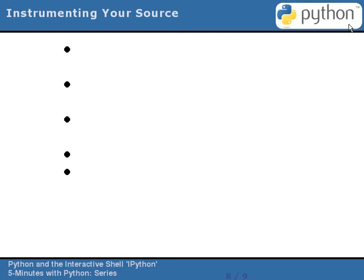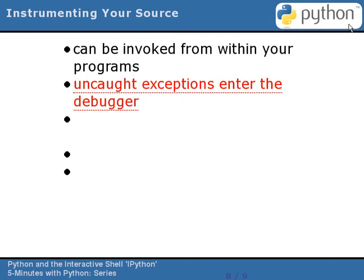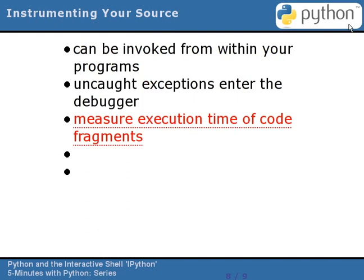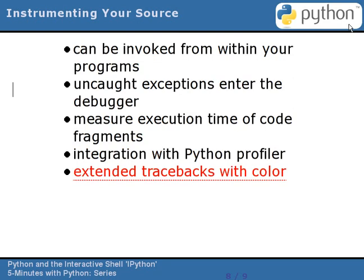IPython provides ways to instrument your source with useful diagnostics. You can put calls in your program to start up an interactive session, giving you access to the variable namespace at that point. You can set IPython to enter the Python debugger upon the occurrence of an uncaught exception, letting you walk the stack frame and query variables. You can measure the CPU or wall clock execution time of code fragments, or run your code under the Python profiler for more detailed measurements. And you can set your preferred display of Python tracebacks, colorized for readability and with an extended mode of execution that shows more information.